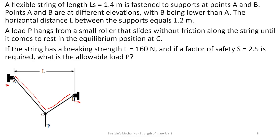Points A and B are at different elevations. The position of A is quite higher than the position of B, with B being lower than A. The horizontal distance L between the supports equals 1.2 meters. A load P hangs from a small roller that slides without friction along the string until it comes to rest in the equilibrium position at C. So after the string was attached to the support, there is a force which is also attached to the string to pull it down, and there is equilibrium at this position.